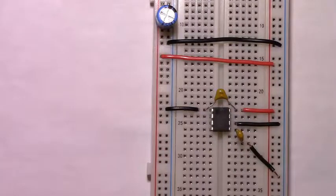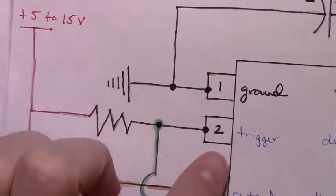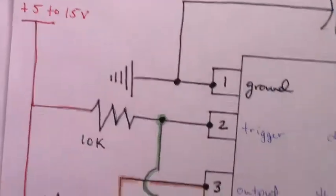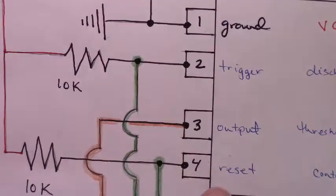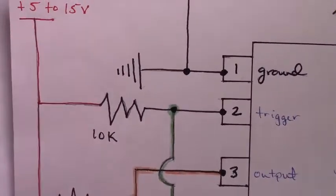We can refer back to the schematic just to verify that. We have pin 2 connected to the power rail through a 10K pull-up. We have pin 4 reset connected through a 10K pull-up to the power rail.